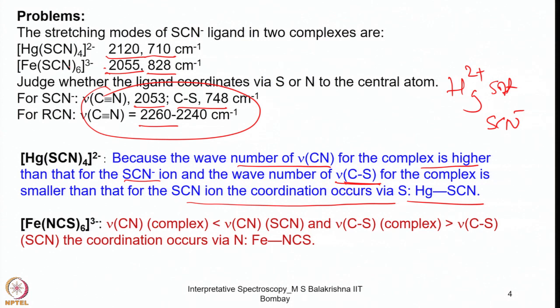Mercury ore is cinnabar — mercury sulfide — which also confirms mercury's affinity towards sulfur. But without any ambiguity, simply by comparing stretching frequency data with that of the free ligand, we should be able to identify the correct linkage for ambidentate ligands capable of showing linkage isomerism, whether S or N is binding.